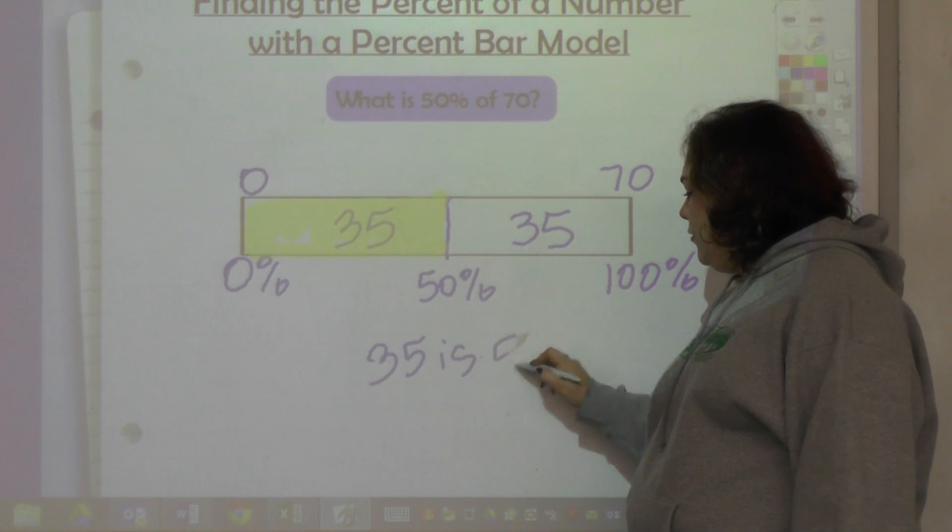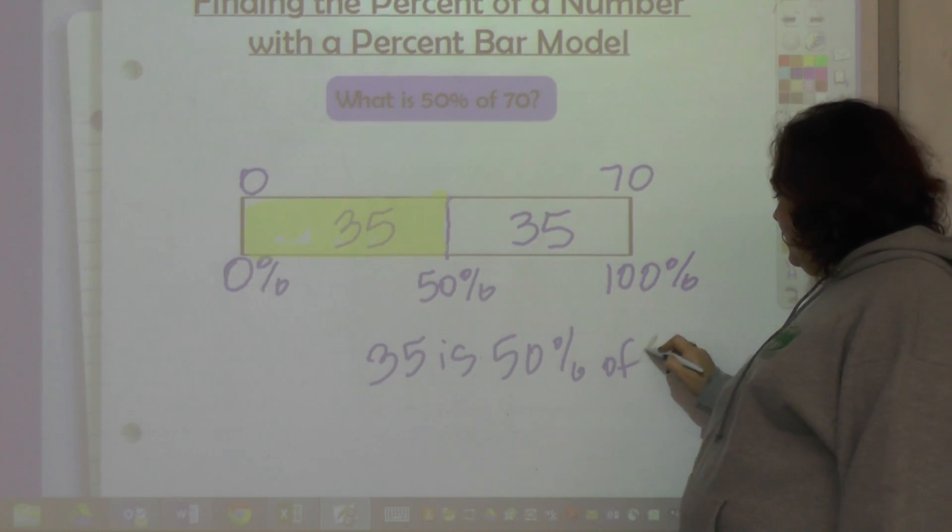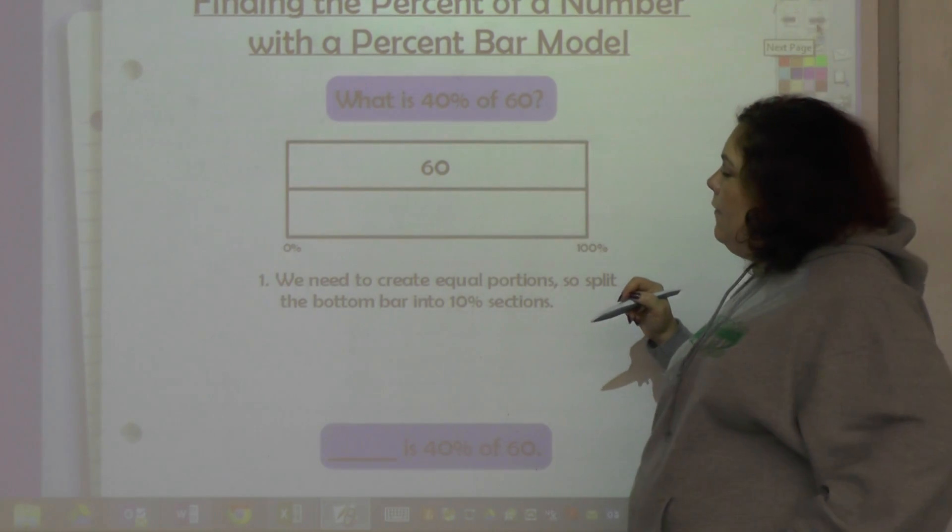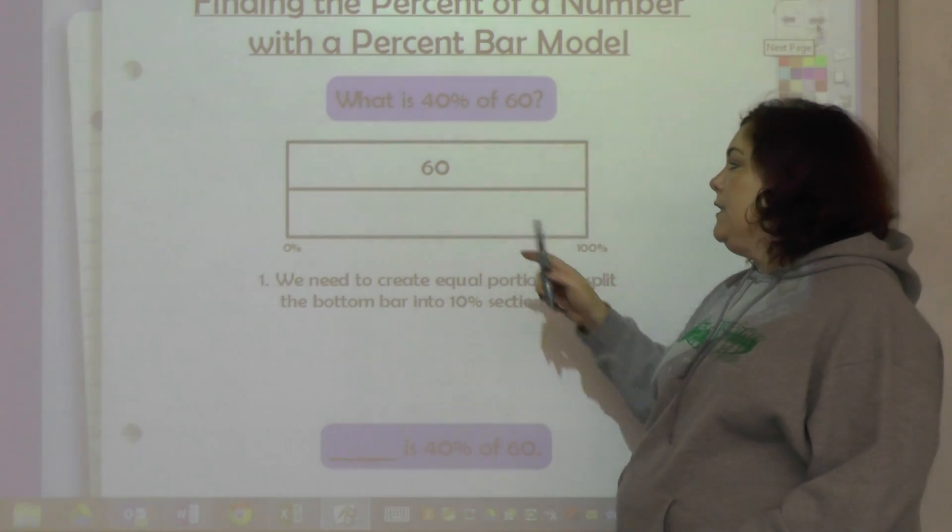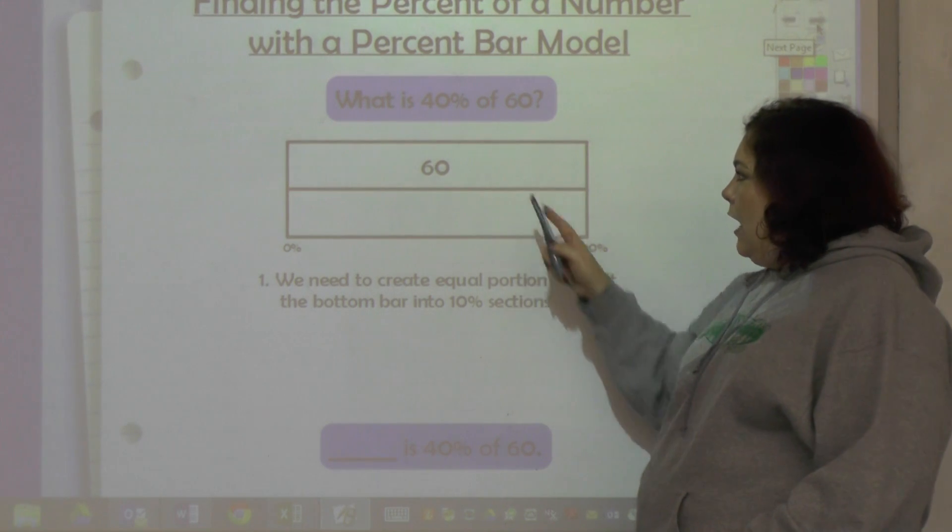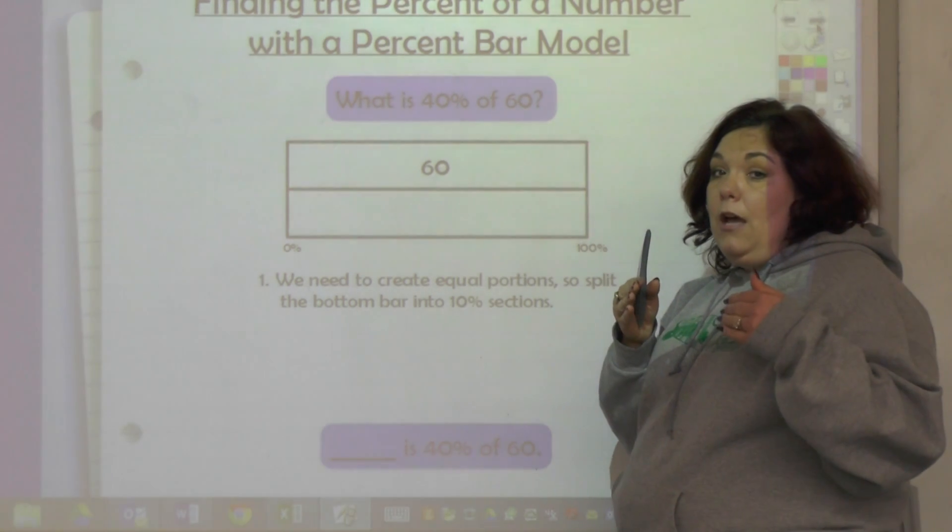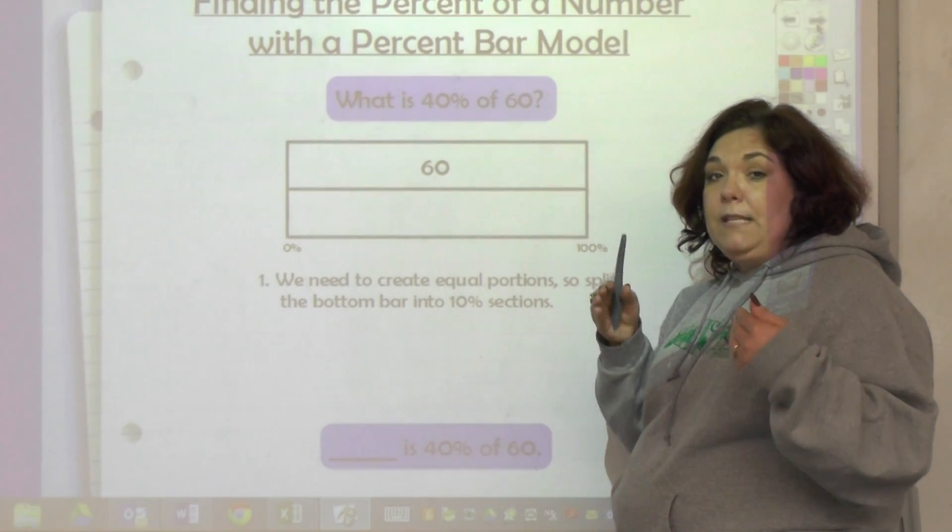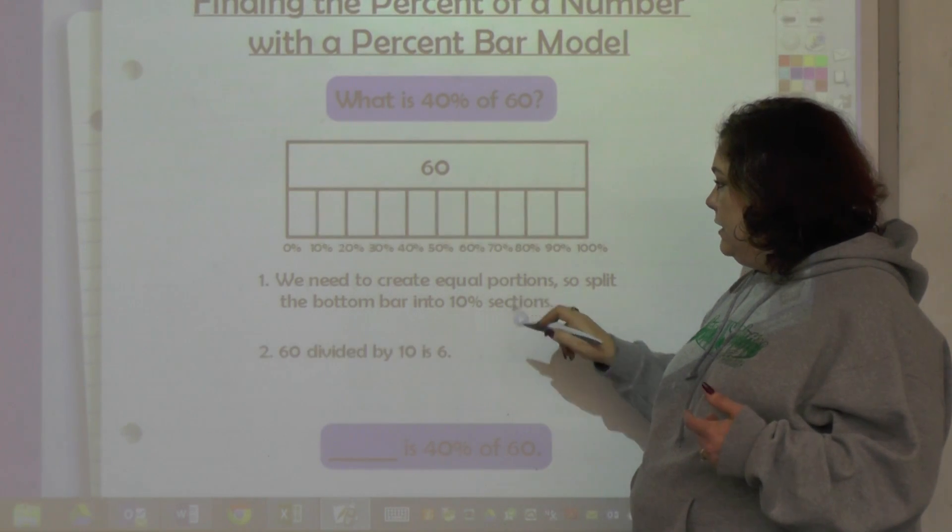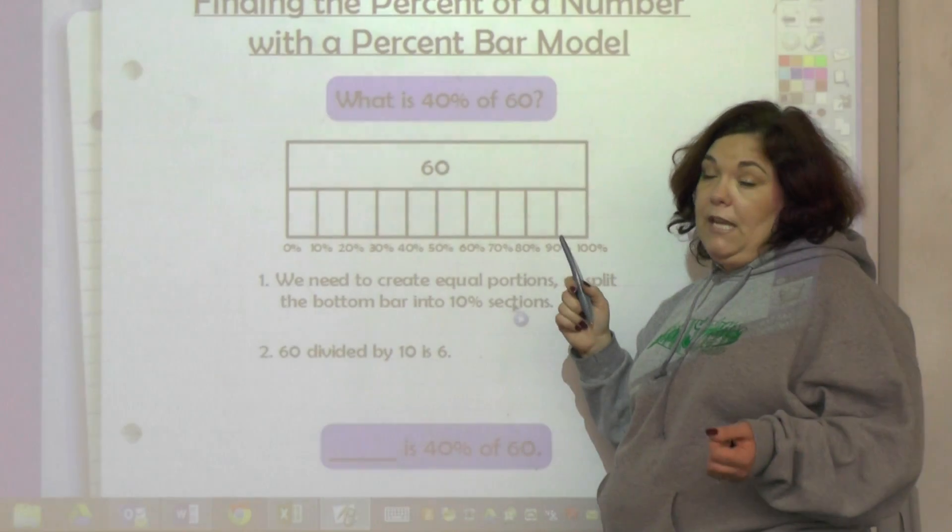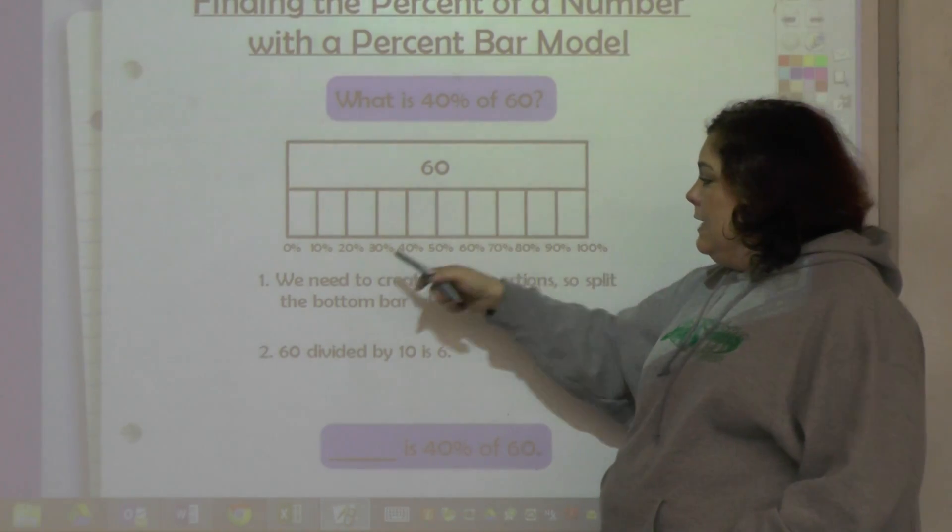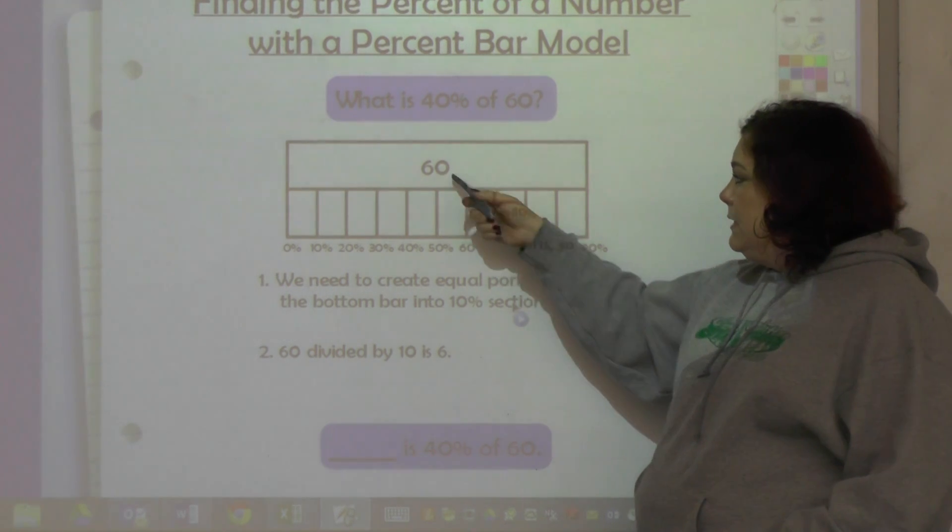So let's look at another one - 40% of 60. So they filled in what they know: 60 is the whole thing, it's zero to 100%. I want to get 40%. That is a multiple of 20, and we said 20% was in fifths. And this actually says do 10% sections, so 40 is a multiple of 10 also. So 10 parts, and then they label the percents along here.